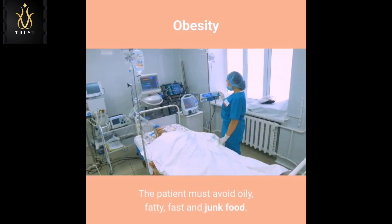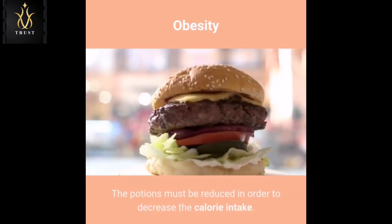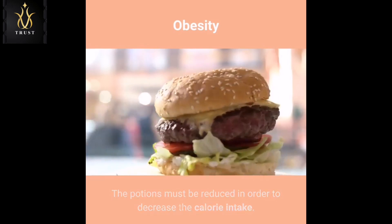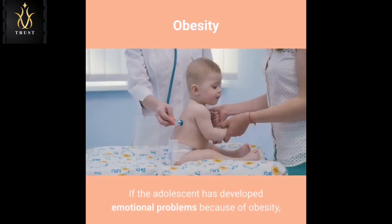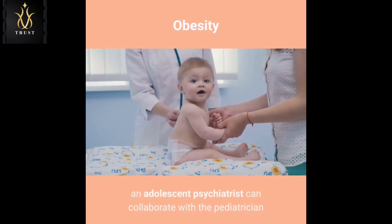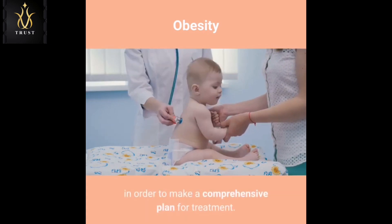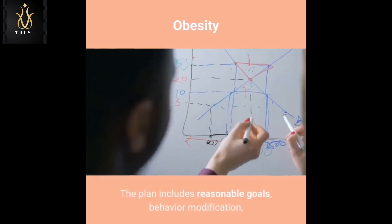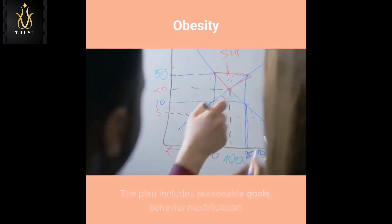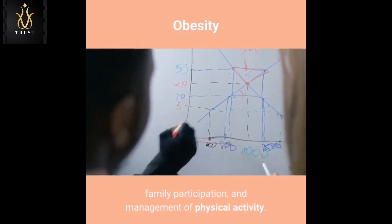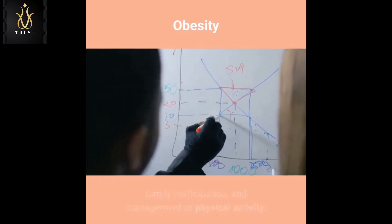The patient must avoid oily, fatty, fast, and junk food, and portions must be reduced in order to decrease calorie intake. If the adolescent has developed emotional problems because of obesity, an adolescent psychiatrist can collaborate with the pediatrician in order to make a comprehensive plan for treatment. The plan includes reasonable goals, behavior modification, family participation, and management of physical activity.